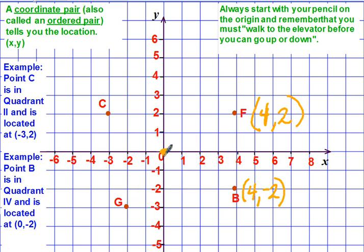For point G, start at the origin. One, two. So we had to go negative two, comma. And then we have to come down. One, two, three. So a negative three.